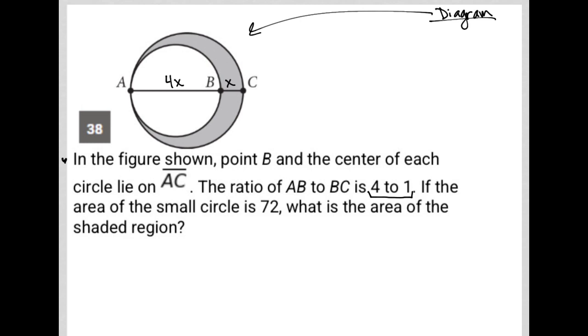The next sentence says, if the area of the small circle is 72. You know what? I'm going to use a strategy that I love to use when there's a shaded versus non-shaded shape, especially when they're superimposed on top of each other, is to redraw each shape separately.